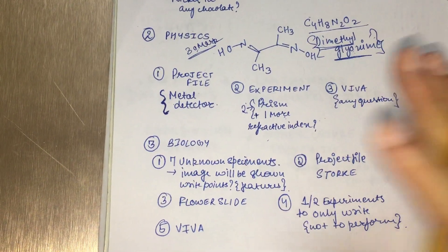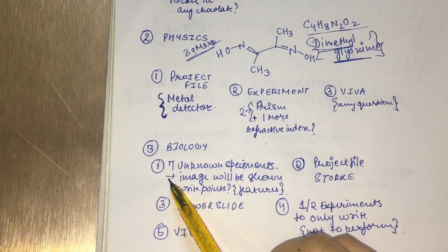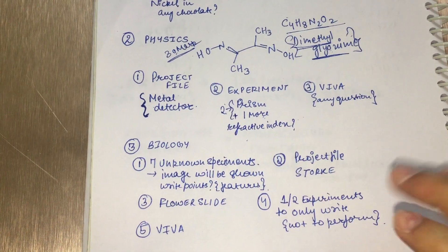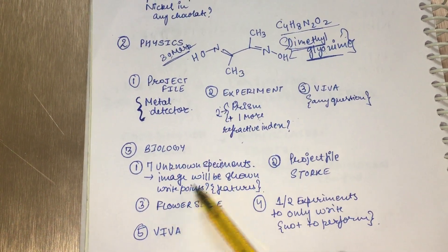Hi, this is Priyanka and I'm going to be telling you about biology board practical. So first of all, you'll be given seven unknown specimens with names covered and so you have to write their names and two to three points on them.